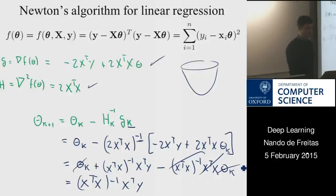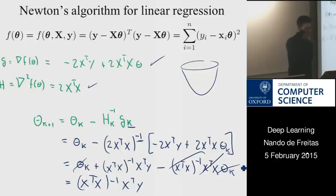Not so with gradient descent — with the gradient, you need to think carefully about eta. Even in a quadratic bowl, you could be oscillating for a long time, or you could be too sluggish.